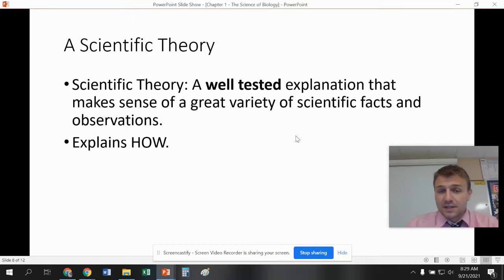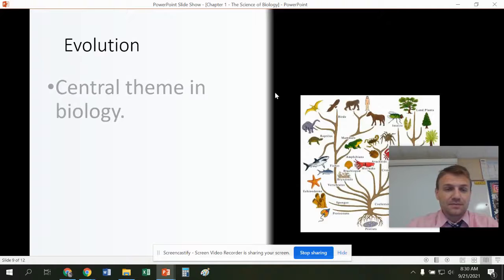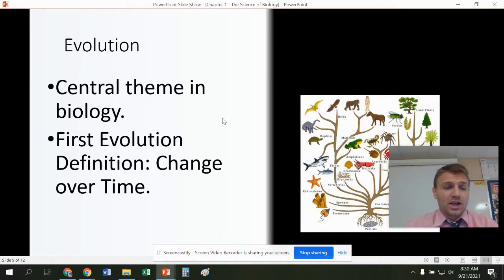Scientific theory is a well-tested explanation that makes sense of a great variety of facts and observations. This explains how. A lot of people think that this is just a guess by science, and it's not. This is kind of like our pinnacle in science. This is one of our best things that we can produce because there's so much evidence behind these scientific theories. And what people don't like is that theories can change with new evidence, and that's the great thing about theories is they themselves become more and more accurate as time and information goes on.